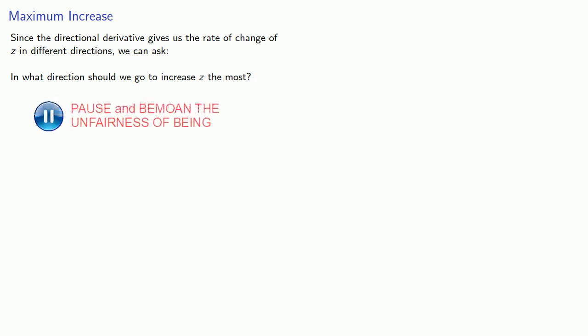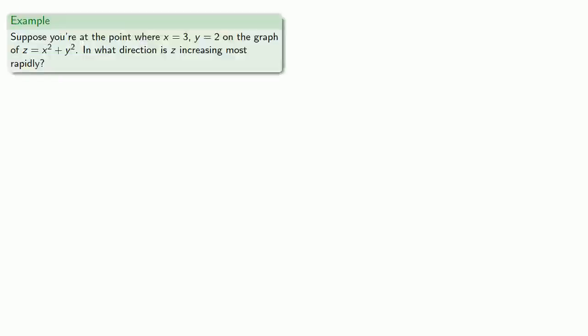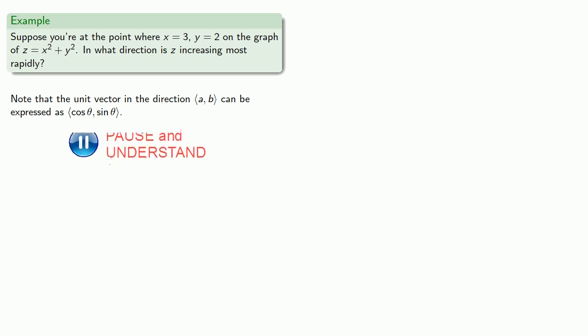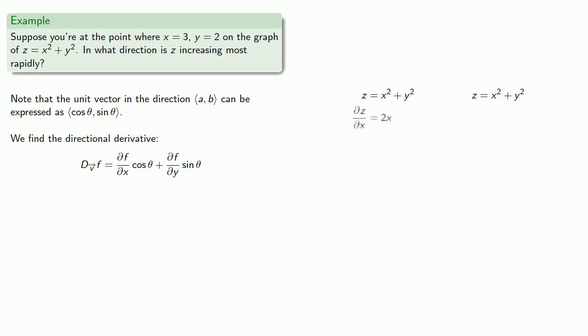Since the directional derivative gives us the rate of change of z in different directions, we can ask: in what direction should we go to increase z the most? Answering a question like that requires calculus — but you've already had two calculus courses before this one, so we should be able to do this. Suppose you're at the point where x equals 3, y equals 2 on the graph of z equals x squared plus y squared. In what direction is z increasing most rapidly? It's helpful to note that the unit vector in the direction (a, b) can be expressed as (cosine θ, sine θ), so we can find our directional derivative by differentiating. Notice that our directional derivative is a function of θ, so to find the maximum value we can use calculus.